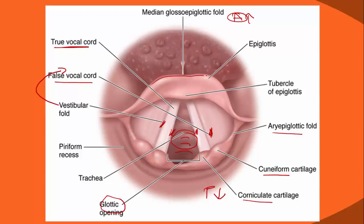The epiglottis appearance and its tubercle may be among the few structures visible during intubation. The esophagus is at the posterior field — it normally appears flattened and difficult to see. Passing the tube into the esophagus is fatal if not recognized, because the cuffed tube closes off the esophagus and all ventilation goes directly through the tube into the stomach.